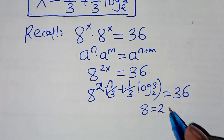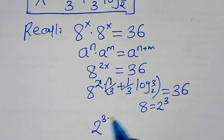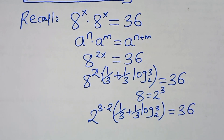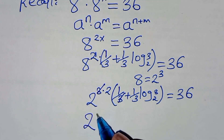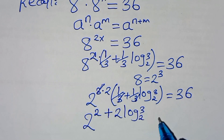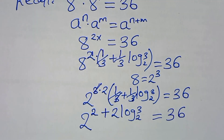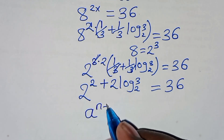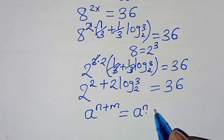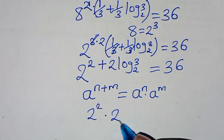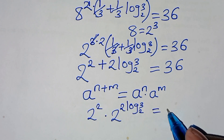Expressing 8 as 2³, we have (2³) raised to the power 2·(1/3 plus (1/3)·log₂3). Simplifying, this becomes 2 to the power (2 plus 2·log₂3). Using the property that a^(m+n) equals a^m times a^n, this gives us 2² times 2^(2·log₂3), which should equal 36.